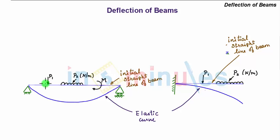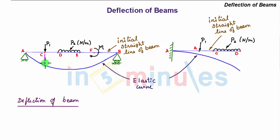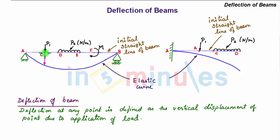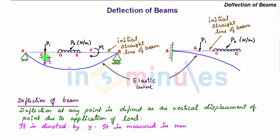If we define some points on the beam as shown in the figure, the deflection of the beam at any point, for example C, is defined as the vertical displacement of that point due to the application of load. At point C, when no load was applied the beam was initially straight; due to the load the beam bends into an elastic curve. This total vertical displacement is called the deflection at point C, denoted by small letter y, written as y_C, and measured in mm since the magnitude of deflection is very small.